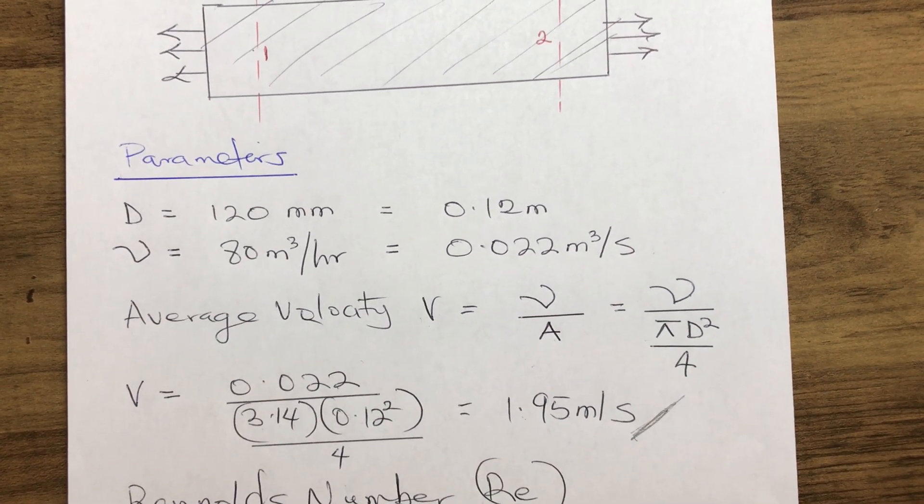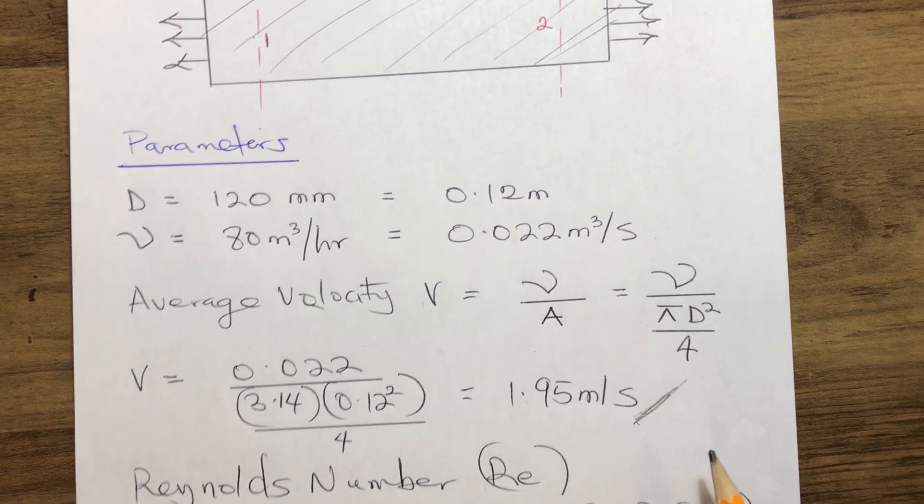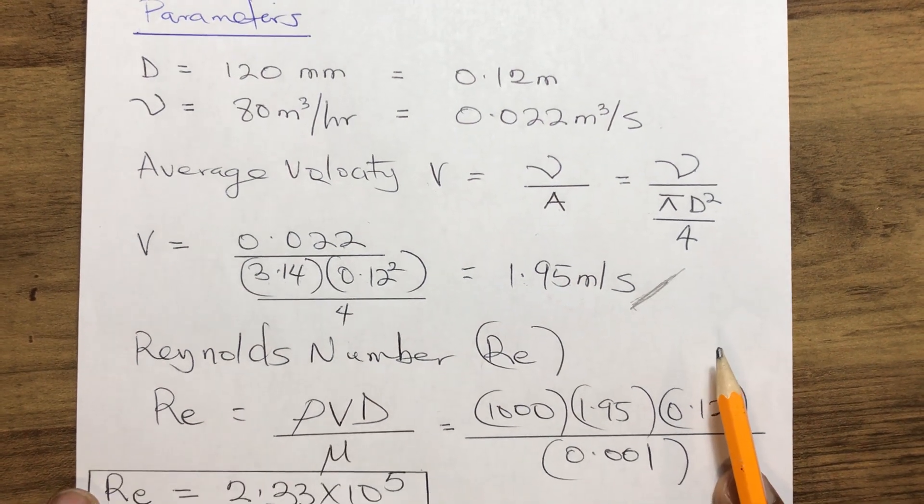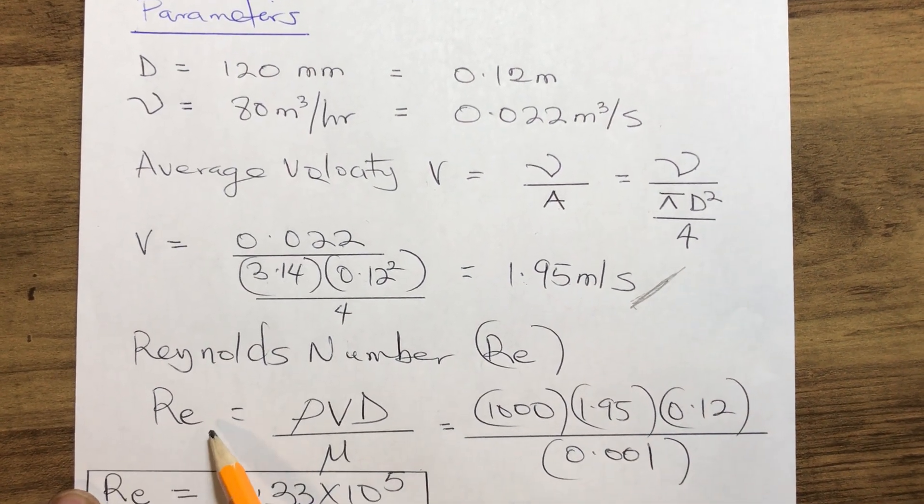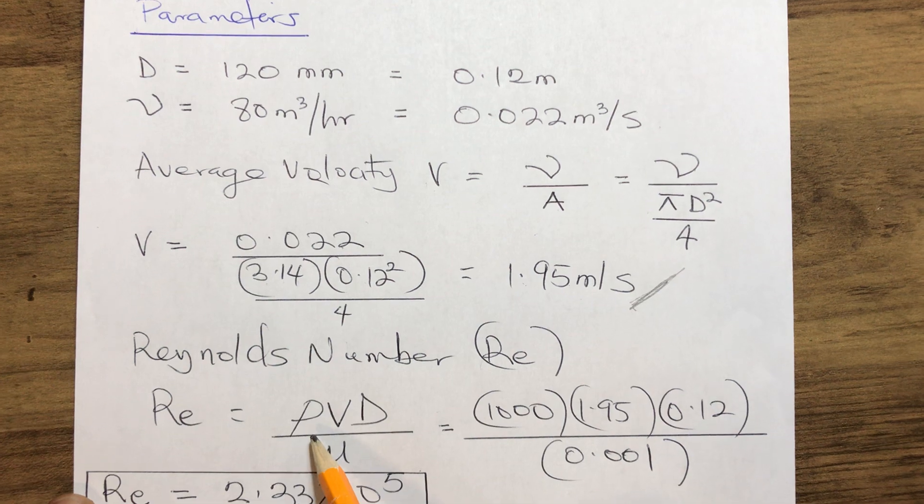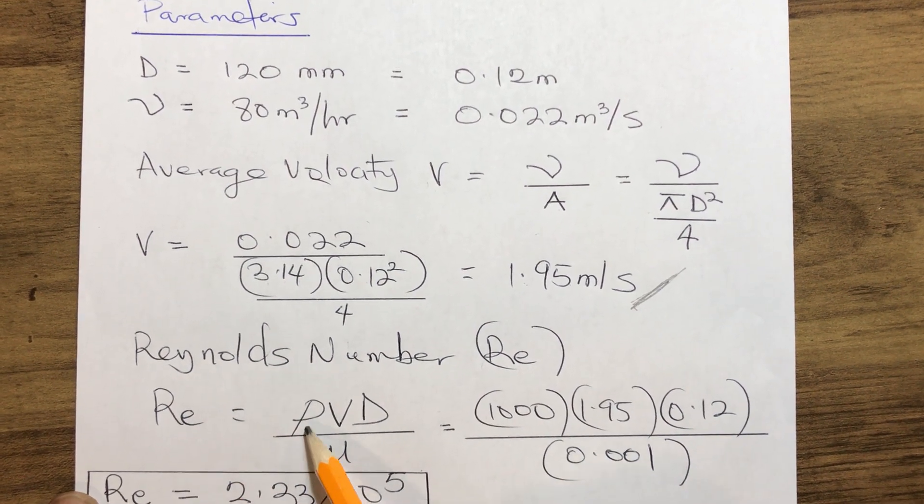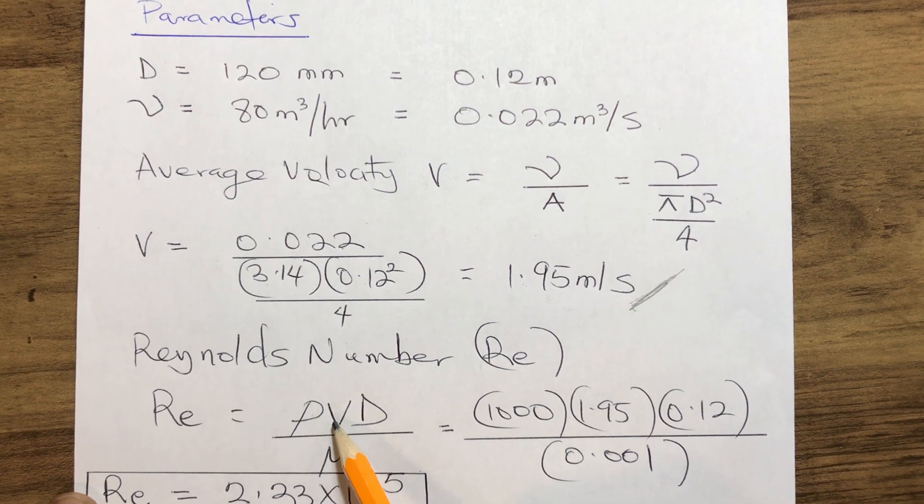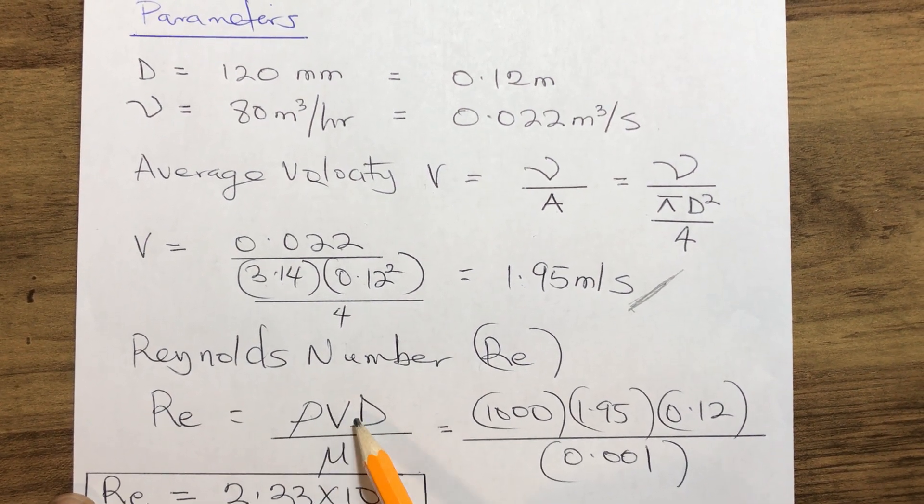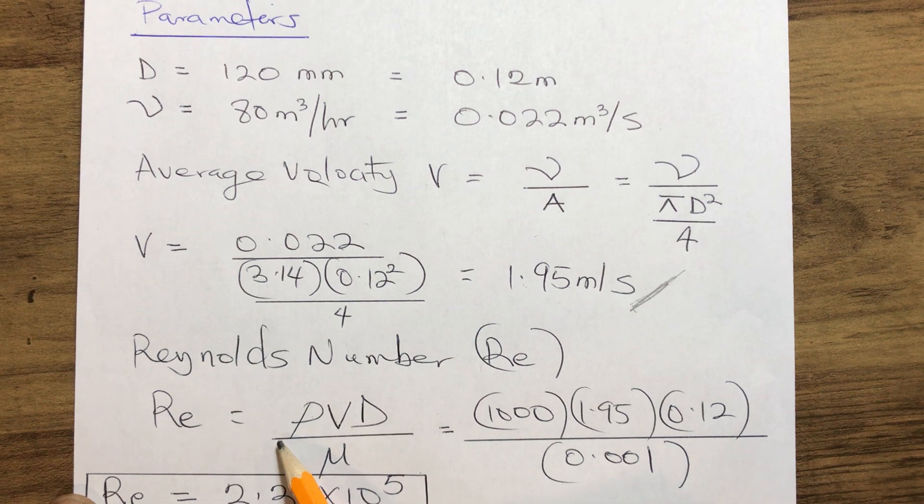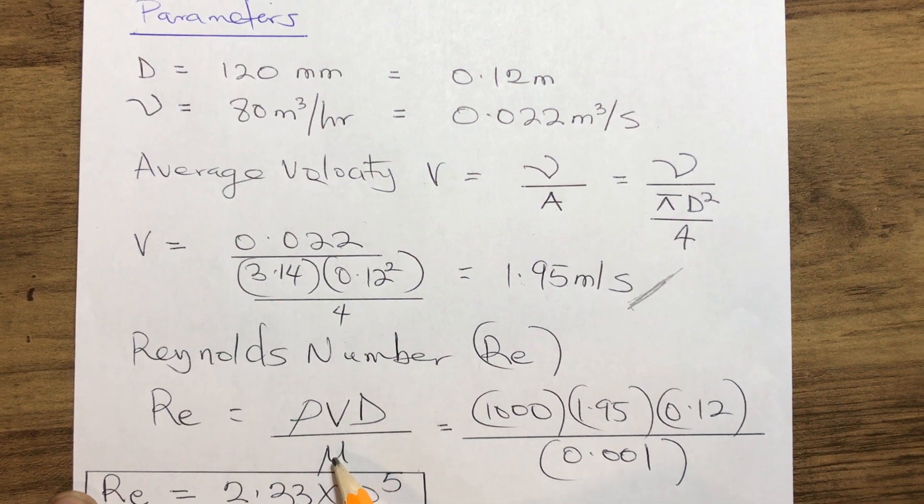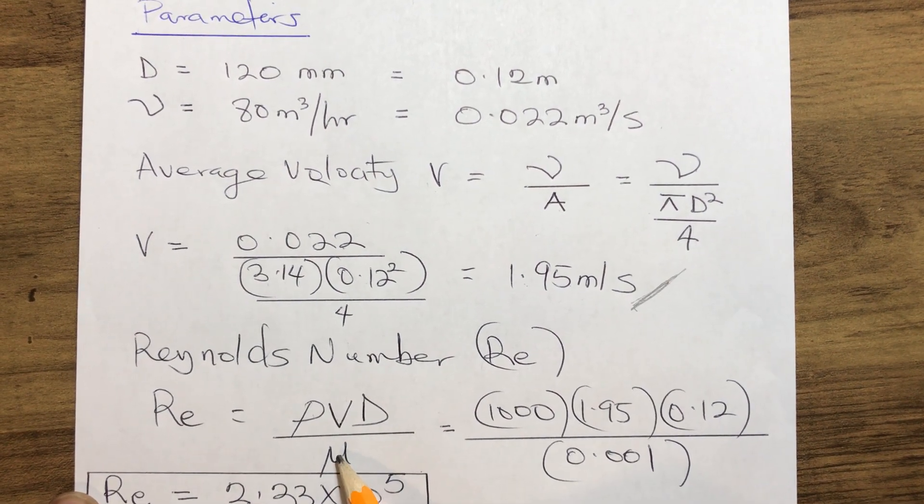Now, the formula for Reynolds number: Re = ρVD/μ. That is, Reynolds number equals the density multiplied by the velocity multiplied by the diameter, all over the viscosity.